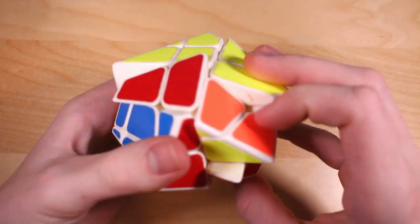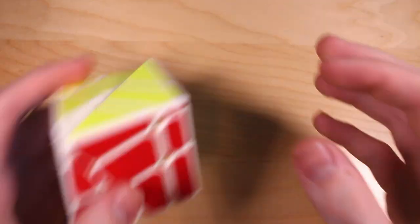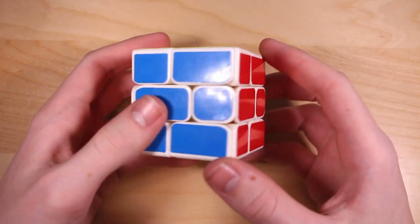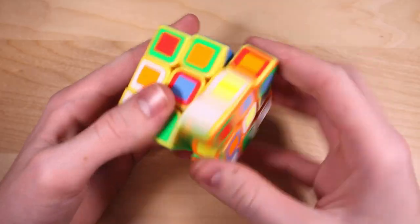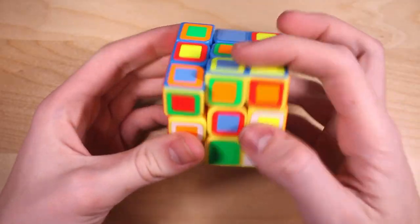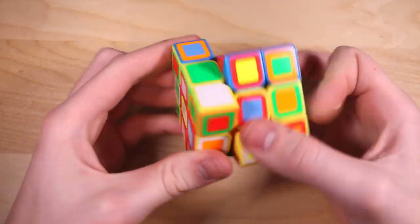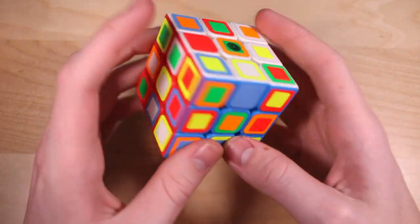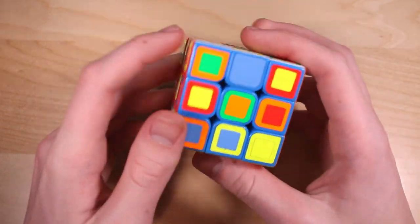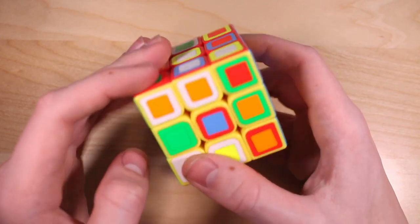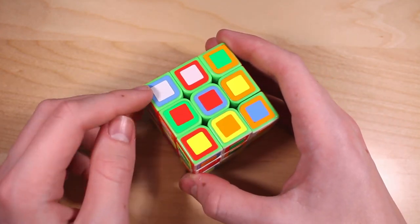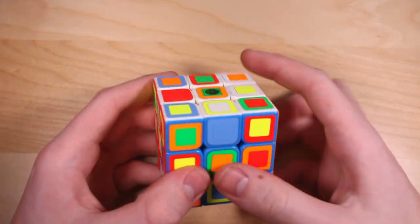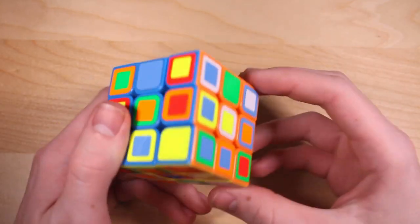MoYu Crazy Fisher Cube. Pretty fun 3x3 shape mod. YJ Windmill Cube Version 2. I reassembled it like this so you have to offset it to turn it. Pretty easy puzzle. YJ Yulong that I made into a Chaos Cube. Wow. This actually turns really, really well. So this was my main for a while before I made it into a Chaos Cube. It has three solve states so it's solved now because the stickerless cube is solved. You can also solve the first layer of stickers or the second layer of stickers. It's a pretty confusing solve because recognition is really hard.